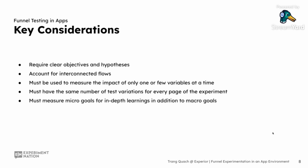Finally, it's crucial to measure both micro and macro goals. While macro goals can be an overall conversion rate improvement or retention, measuring micro goals — such as drop-off rates from one step to another and engagement with the new tested elements — can really help provide a clearer picture of user behaviors during the test.